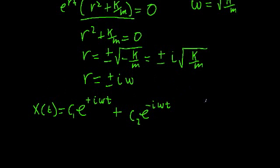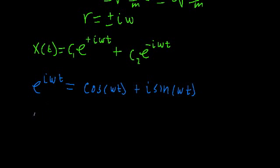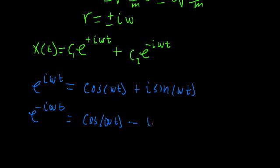We found our general solution. However, we can rewrite it in a more convenient and intuitive way by applying Euler's formula. We know that e to the i omega t equals cosine omega t plus i times sine omega t. Likewise, e to the negative i omega t, using the fact that cosine is even and sine is odd, equals cosine omega t minus i times sine omega t. So we can plug these two formulas in and rewrite our solution in terms of sines and cosines.